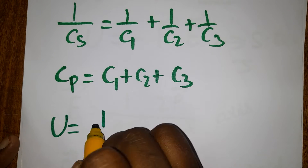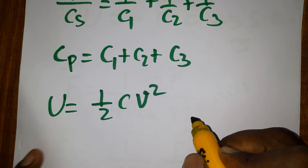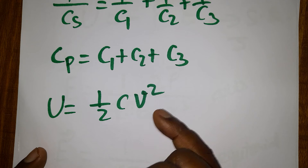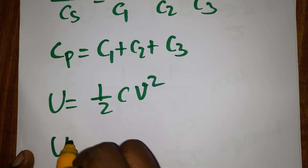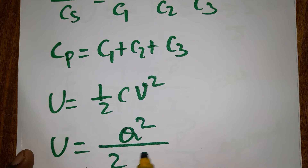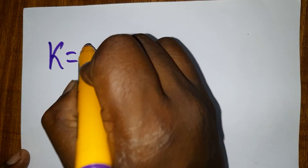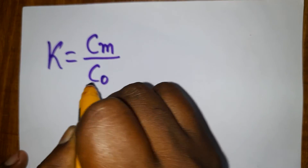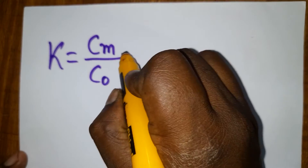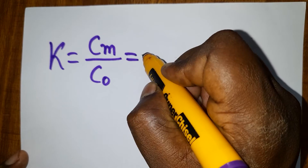Energy stored in a capacitor: U = ½CV². For a series circuit, you can also use U = Q²/2C. The dielectric constant k equals capacitance in medium divided by capacitance in air — this is the value after inserting a medium.